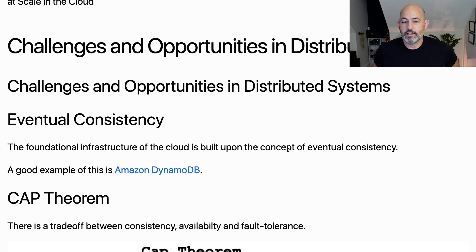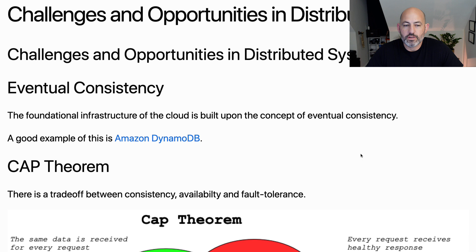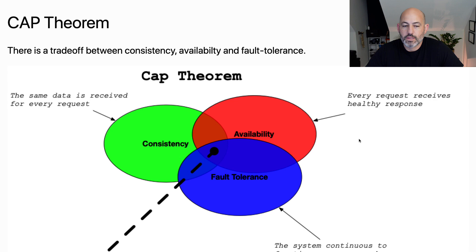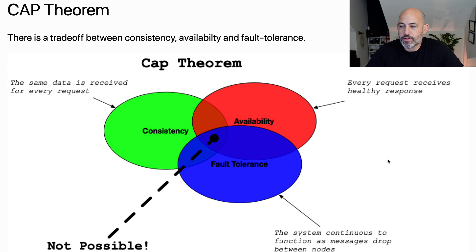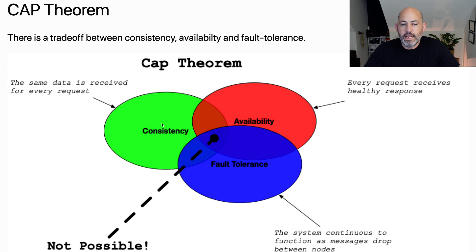There are challenges that occur when dealing with a giant distributed system. One of these is eventual consistency. A good example of a service that takes advantage of this is Amazon DynamoDB. This leads us to the CAP theorem, which describes the trade-off between consistency, availability, and fault tolerance — where every data request is received with the same data, the system always returns a healthy response, and the system continues to function even as messages drop between nodes.